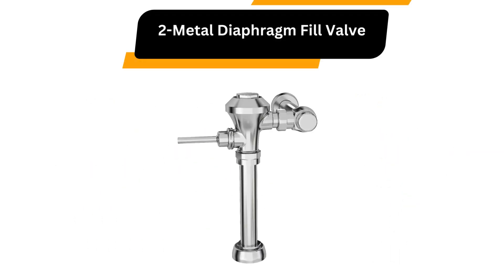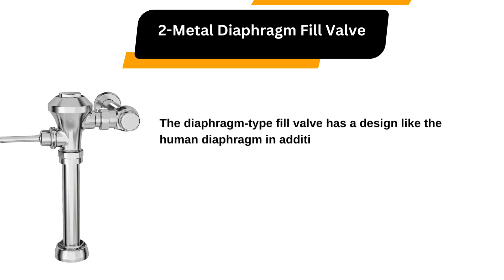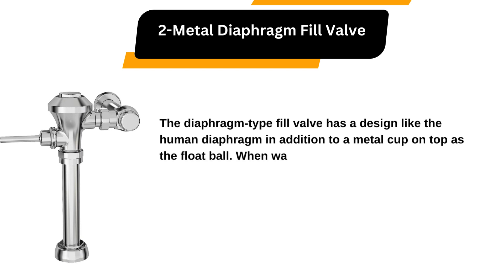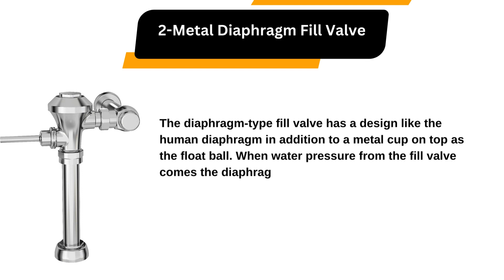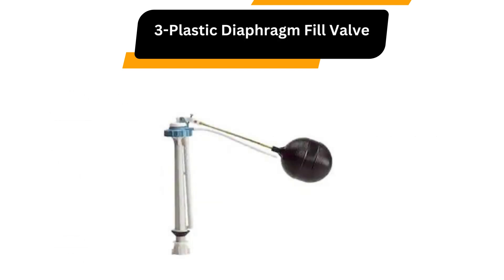Number 2: Metal Diaphragm Fill Valve. The diaphragm type fill valve has a design like the human diaphragm, in addition to a metal cup on top as the float ball. When water pressure from the fill valve comes, the diaphragm lifts off the top and fills the tank. However, the cast brass fill valves are no longer in use these days.